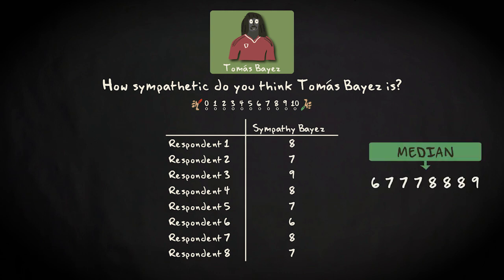However, in this case, there is no single middle value. How do we solve that problem? Well, we just take the average of the two middle values. That's 7 and 8 divided by 2 equals 7.5. The median in this case is 7.5.